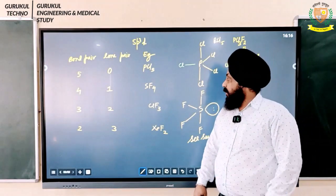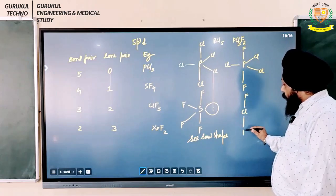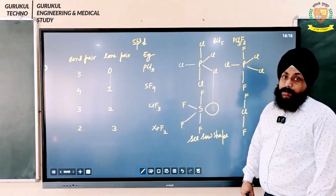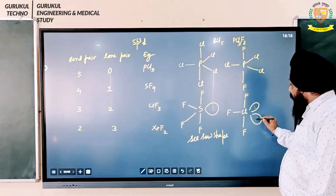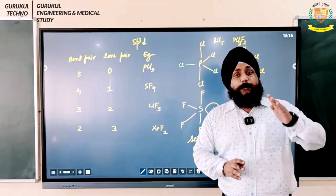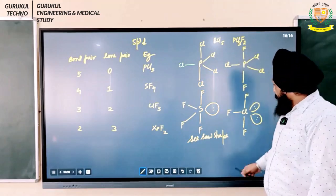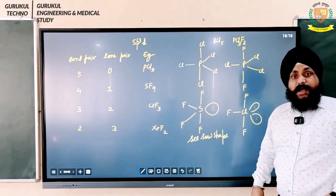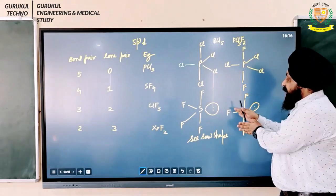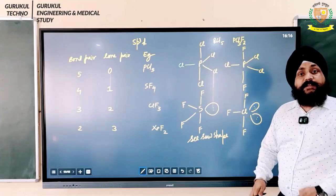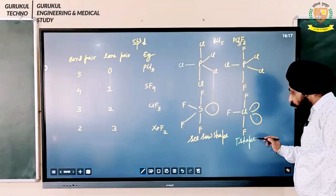Revisiting CLF3: we have three electronegative fluorine atoms and two lone pairs. We only have two axial positions, so the more electronegative fluorines preferentially occupy those axial positions. The remaining fluorine goes to equatorial position and the two lone pairs also occupy equatorial positions. This gives us the T-shaped structure.